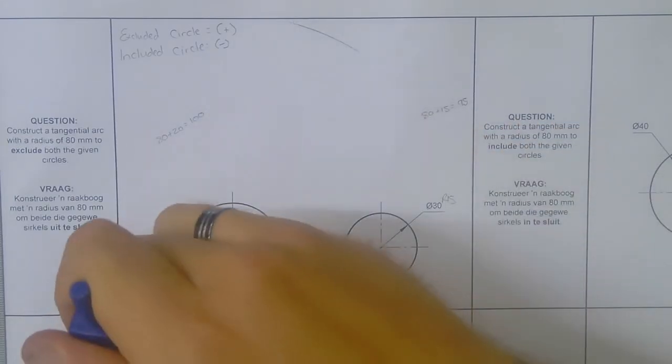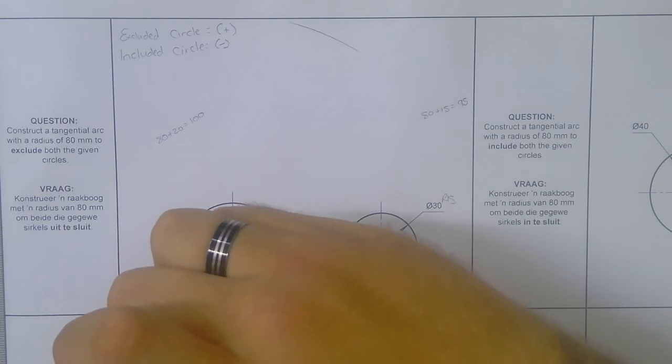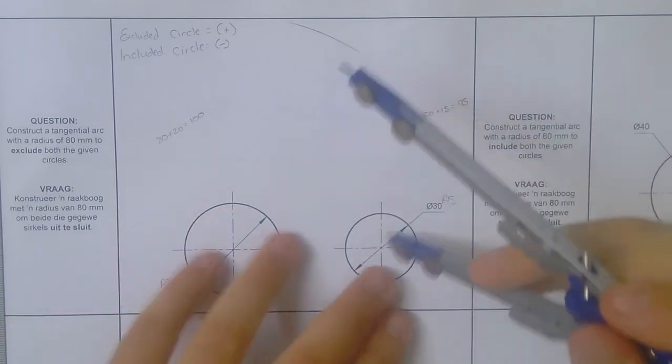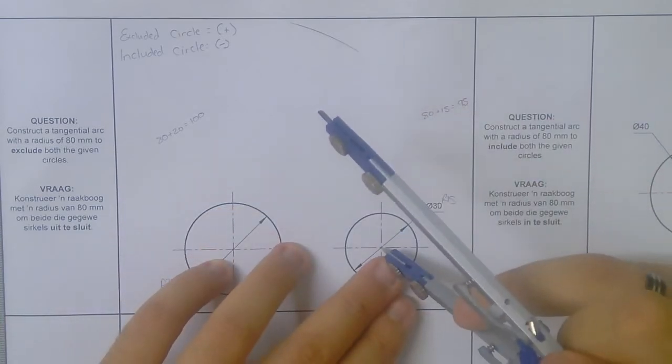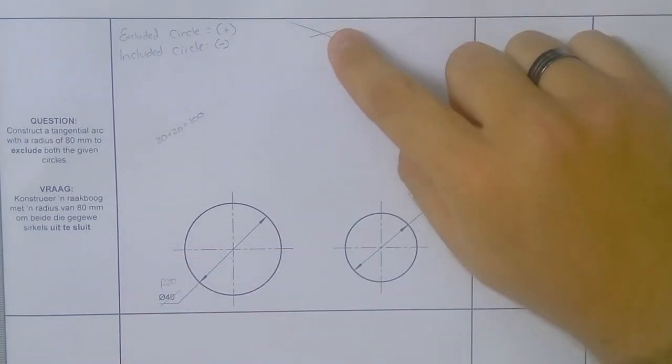And then 95, which is there, and we put it on the 95 circle. So now we have a big X here at the top.